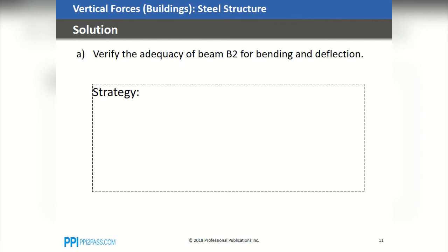The first question asks us to verify the adequacy of beam B2 for bending and deflection. Generally, it's a good idea to form a mental picture in your mind of the steps you will have to take in order to derive the answer, and we're going to call it the strategy in this presentation.